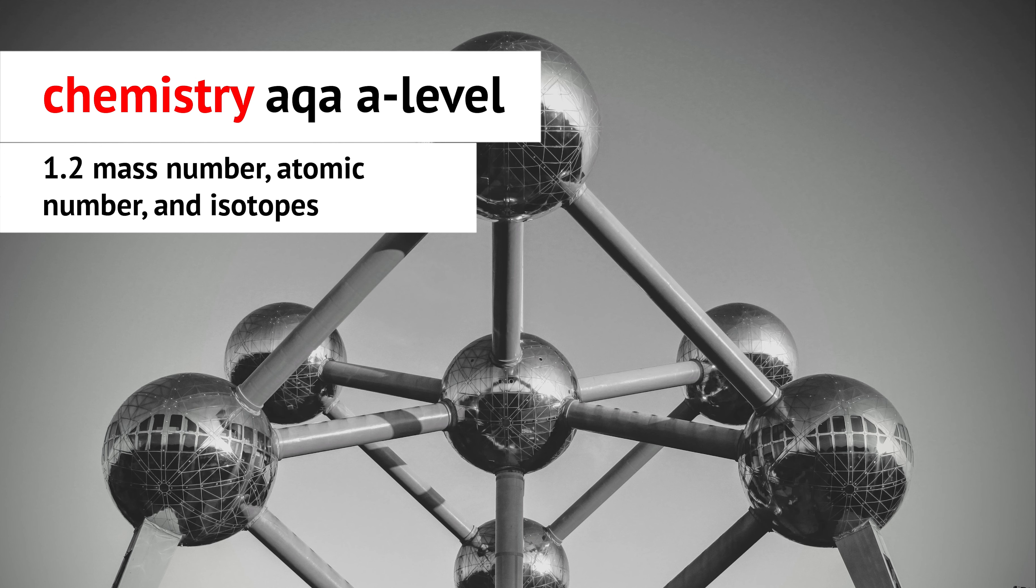Atomic number Z. As you have seen in topic 1.1, atoms consist of tiny nuclei made up of protons and neutrons, that are surrounded by electrons.